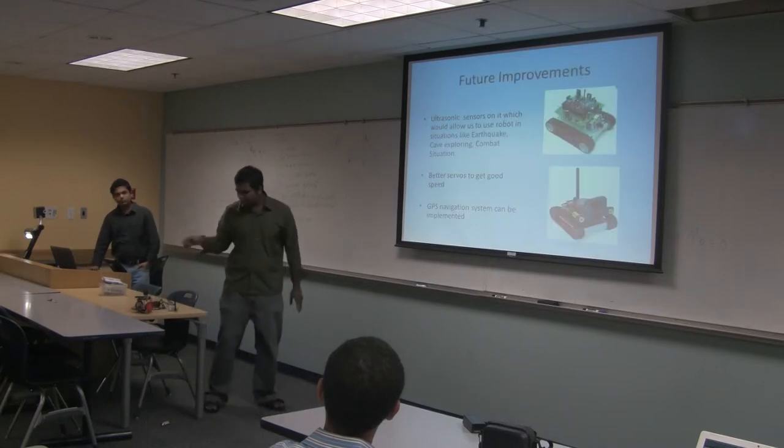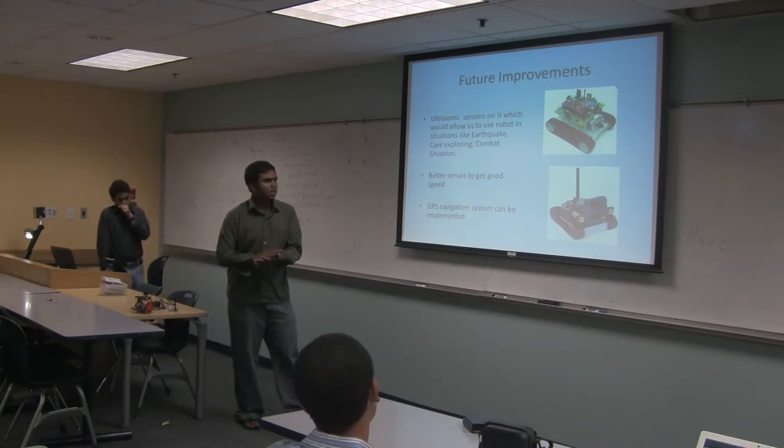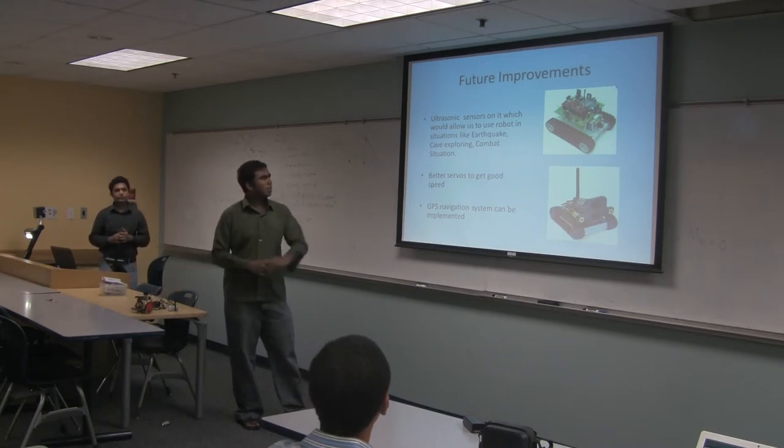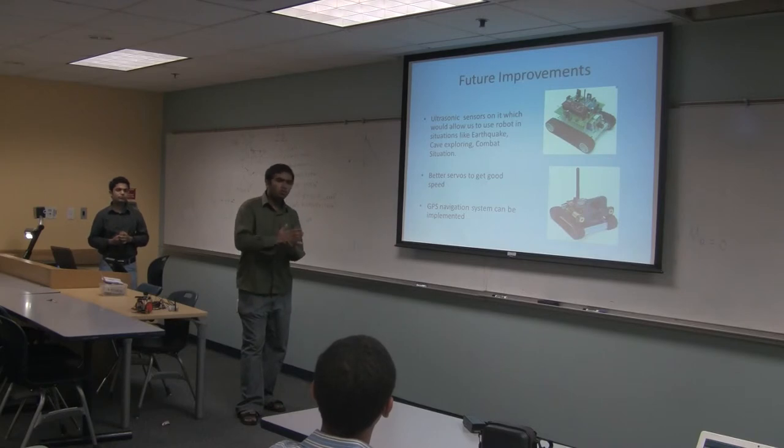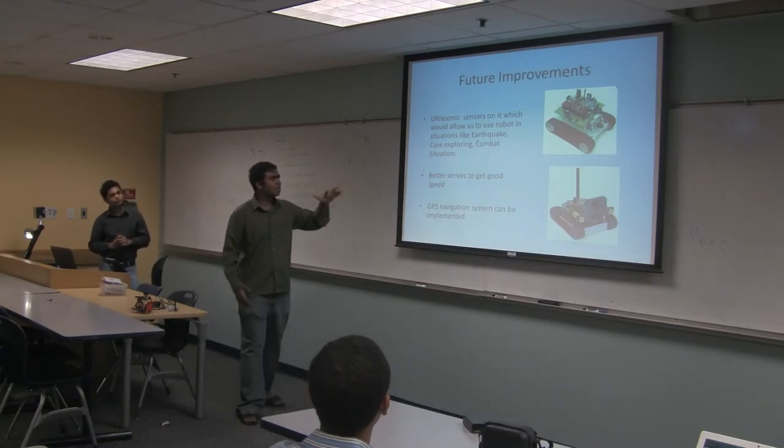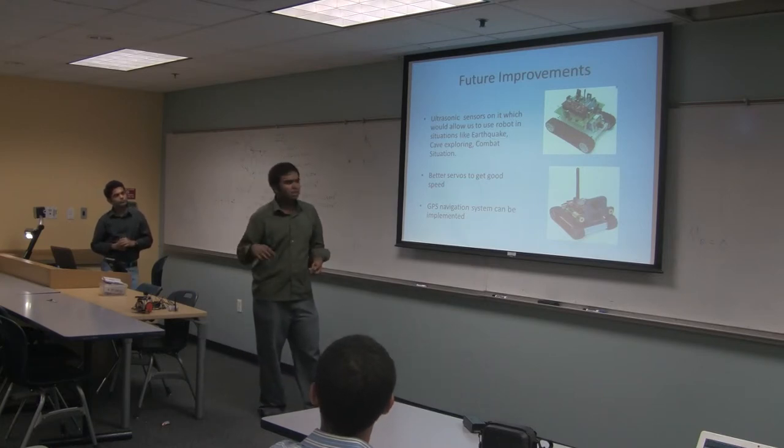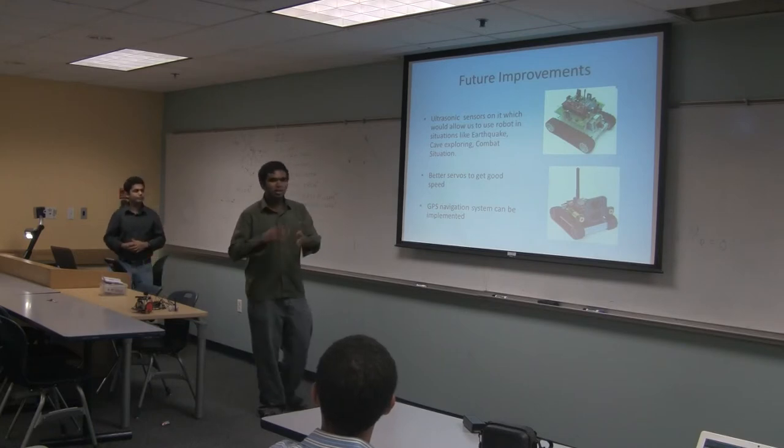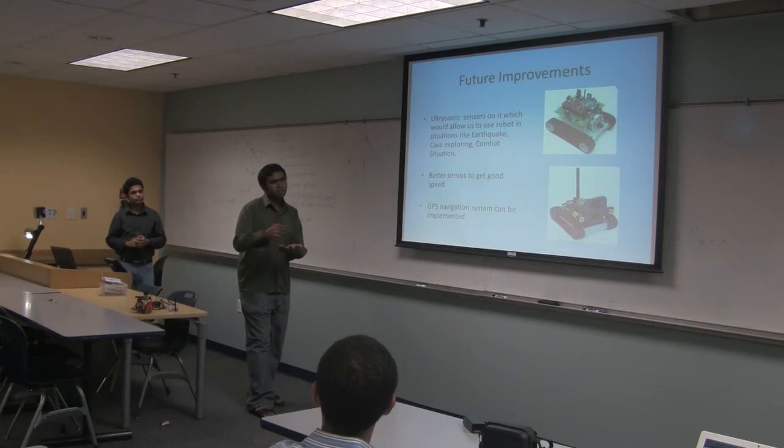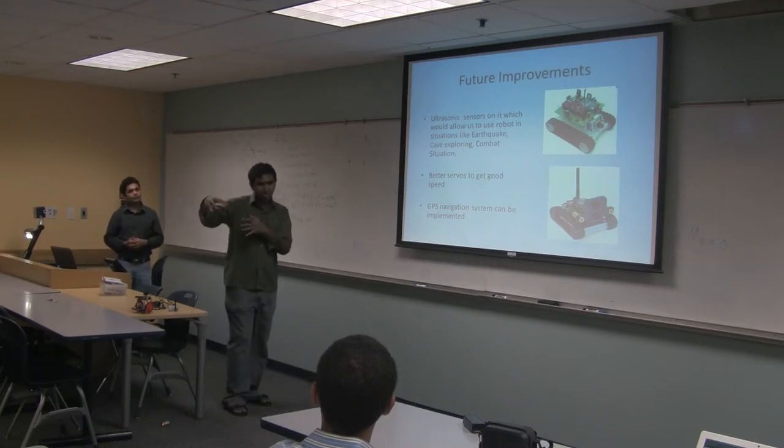Future improvements: We have used ATmega 8 controller. It basically only accepts small sensors like infrared sensors. If you want to use ultrasonic sensors, we should go for ATmega 16 or ATmega 32 kind of microcontrollers which are very advanced. They will allow us to use the robot in situations like earthquake, cave exploring, and combat situations. We can also use better servos to get better speed. If you use it in a combat situation, it will easily find the path and come back very fast. We can also use GPS navigation system so that we can trace the robot.